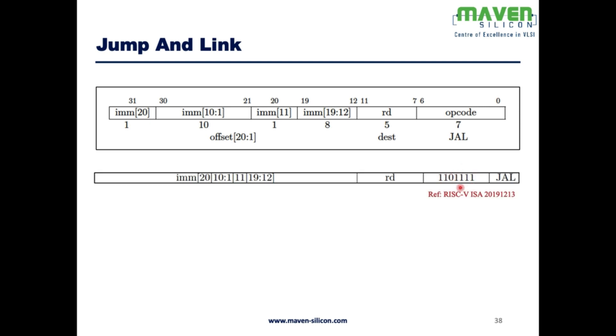So this is the opcode 1101111, it means it's of type J. So when we say JAL jump and link, it's of type J, and this is how we calculate the offset: sign extension of immediate 20 down to 1.